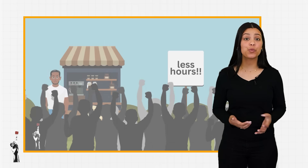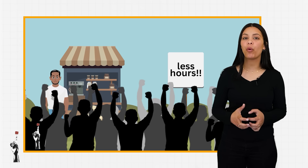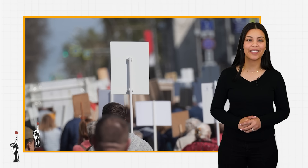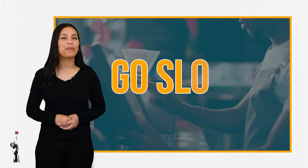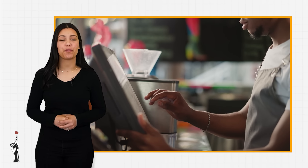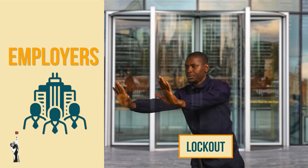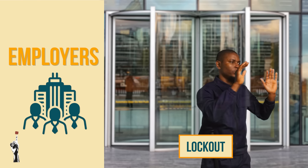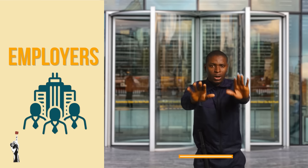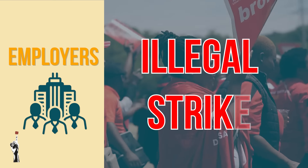Picketing is when workers stand outside the building and protest to gather support from other people for a potential strike. Go-slows are when workers decide to work very slowly, which affects their productivity in the business and, in return, affects the profit of the owner. Employers can also participate in industrial action. A lockout is when there is a temporary work stoppage or denial of employment initiated by the management of a business during a labour dispute. Lockouts can only take place during an illegal strike by workers.